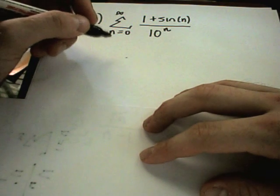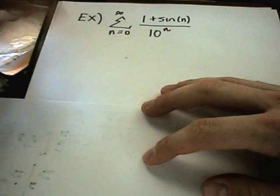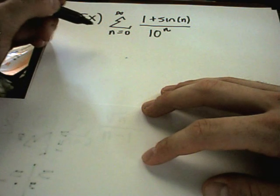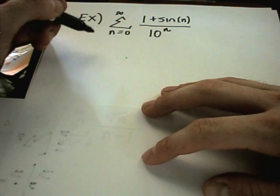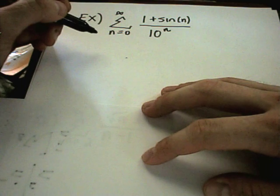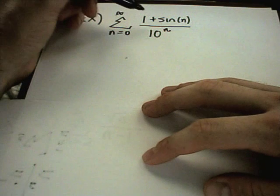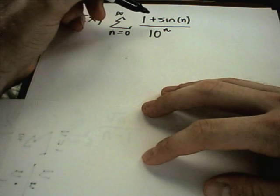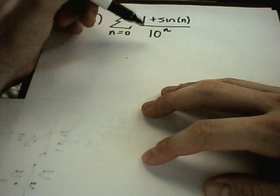Here are a few more examples using the direct comparison test or the limit comparison test to show whether a particular series will converge or diverge. In this case, notice we have 1 plus sine of n over 10 to the n.